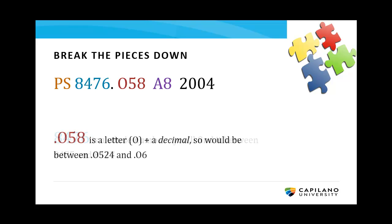The next piece is really different. .058 is a letter and decimal combination. Slow down at this part — it can be confusing to switch from looking for whole numbers to looking for decimals. Because it is a decimal, you'd find it, for example, between .0524 and .06.